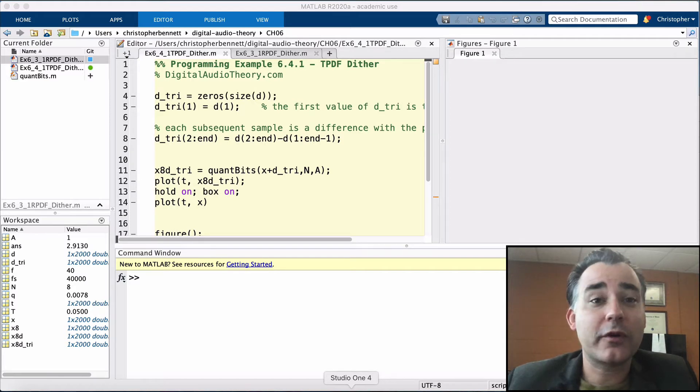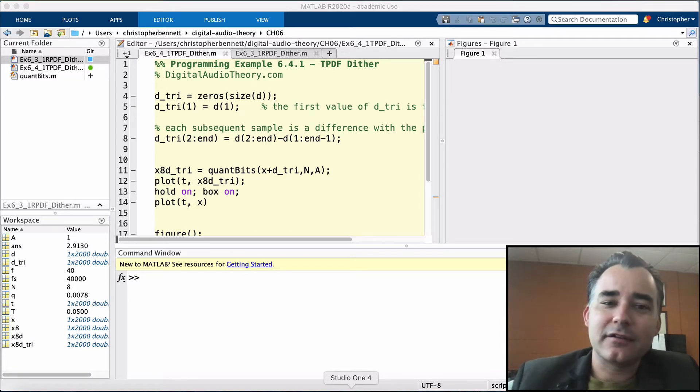So in this programming example, a very low-level signal with an amplitude of Q over 4, so smaller than the lowest quantization step size, it's too low to be captured by the quantizer alone. But the noise modulation appears once some dither is added. We saw this in the last programming example.